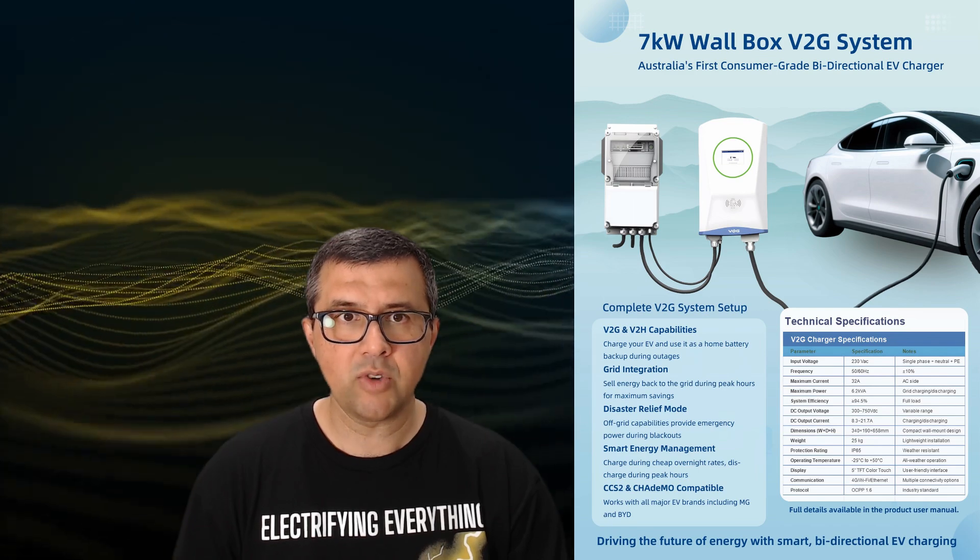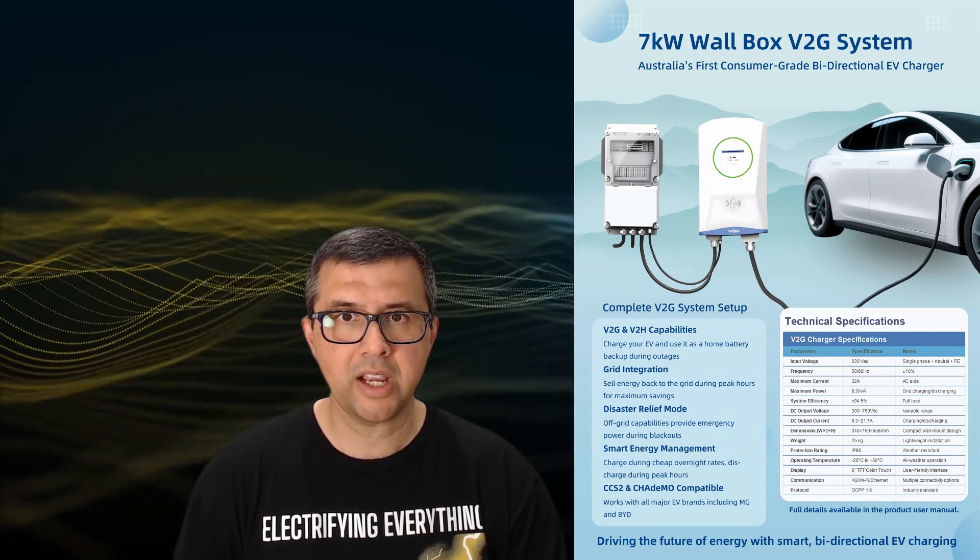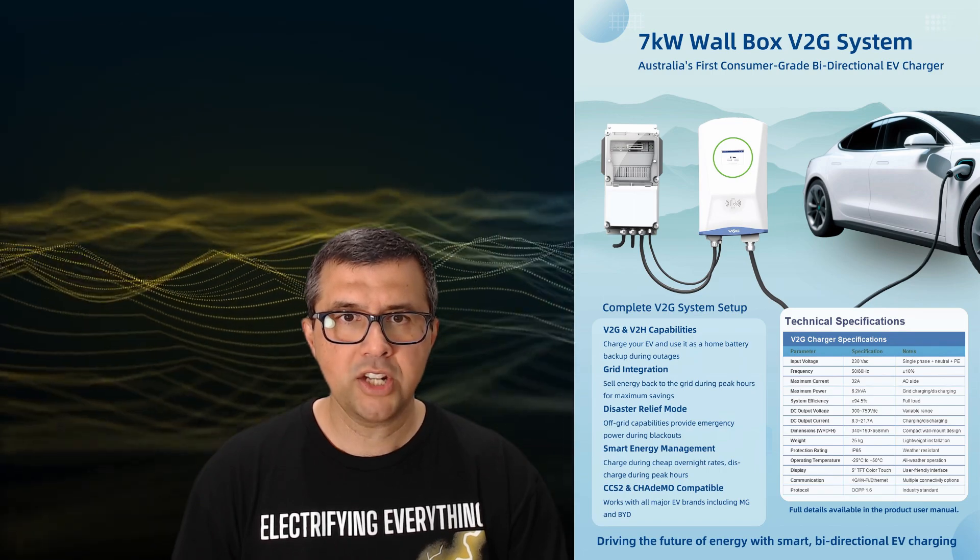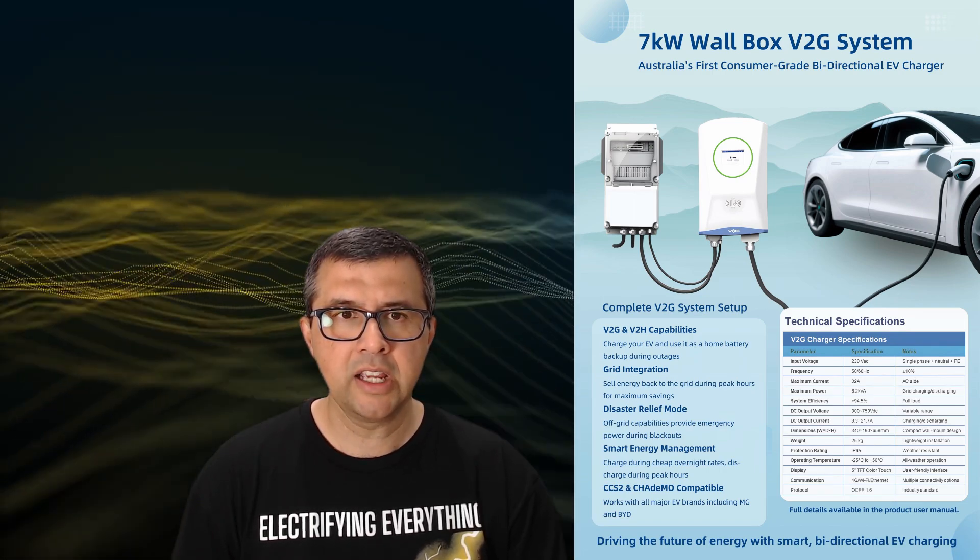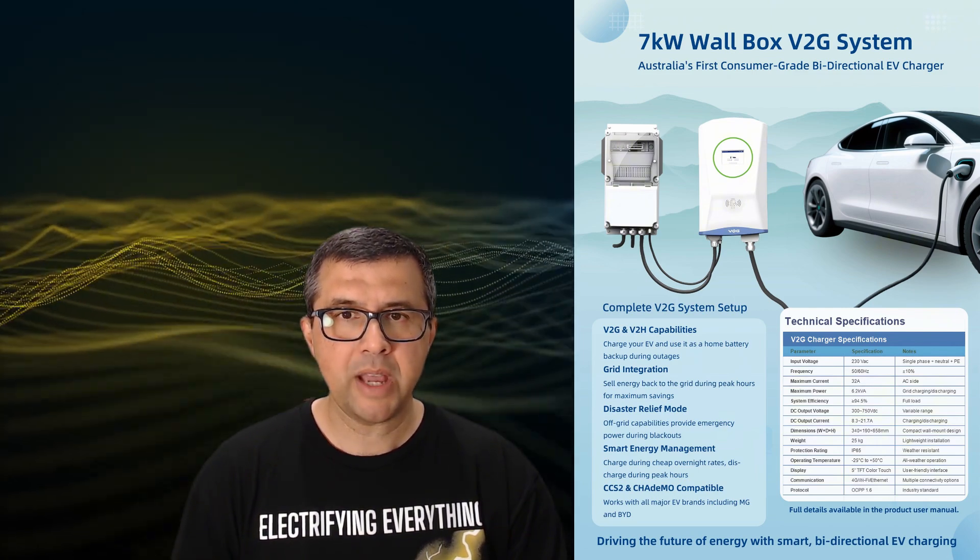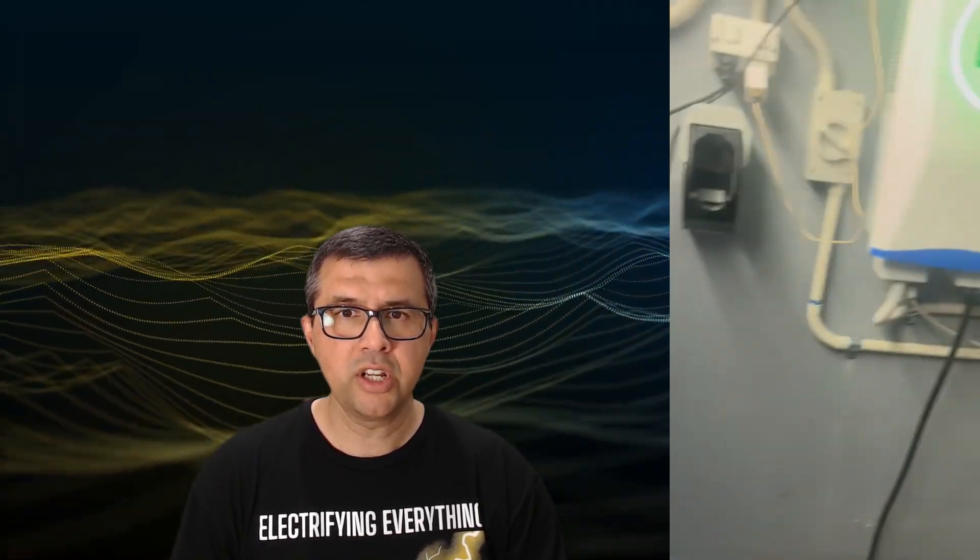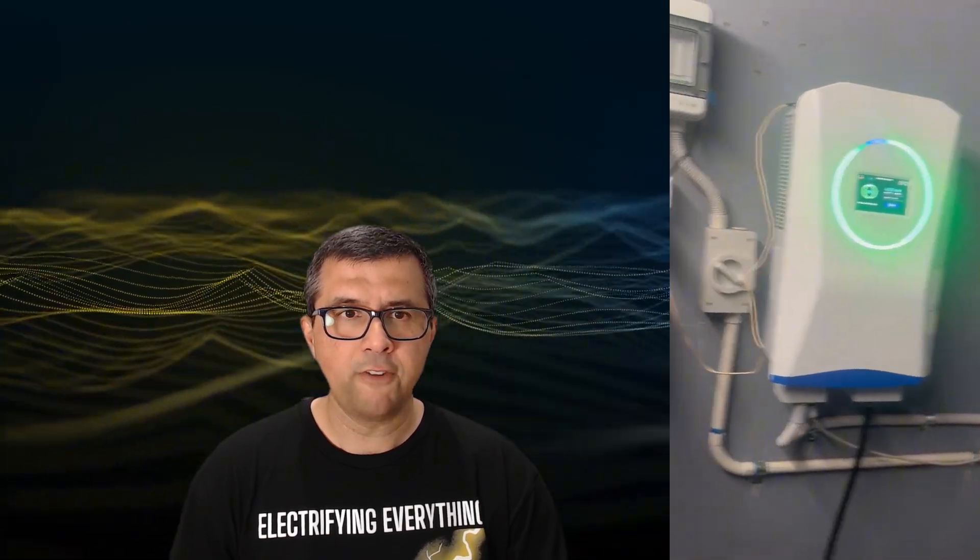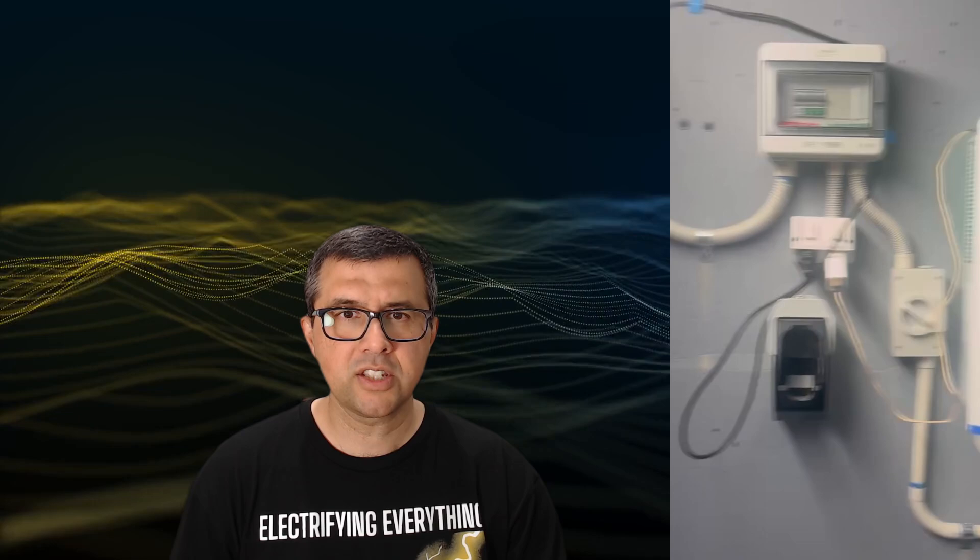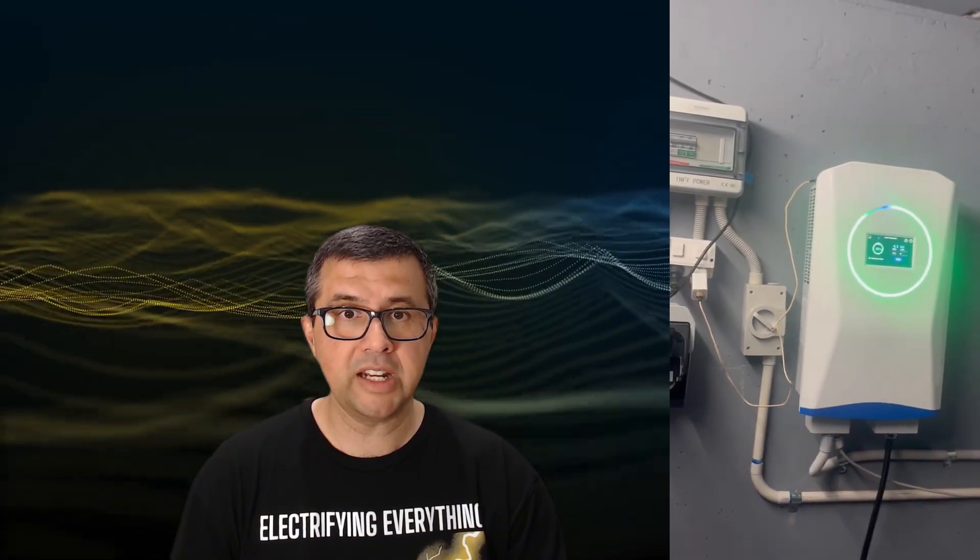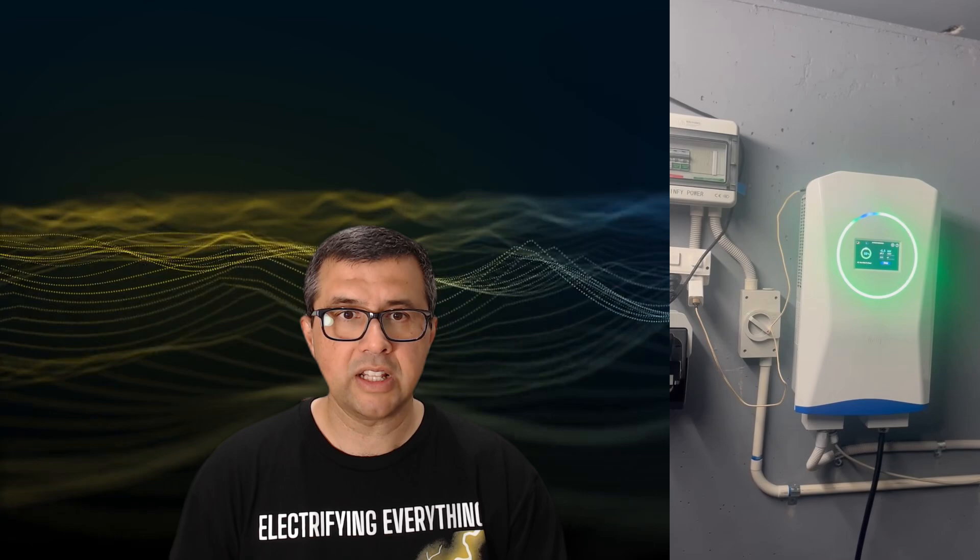Off-grid tests used an isolated load connected directly to the V2H box to emulate household backup. The test method for each EV followed a five-stage sequence: on-grid charging from the building supply, on-grid discharging exporting power back to the building, off-grid discharging powering an isolated load, on-grid to off-grid transition switching from the building supply to an isolated load while discharging with backup mode enabled, and finally an automation sequence—a seven-minute program alternating charging and discharging with power steps at 4 kilowatts and 5 kilowatts.